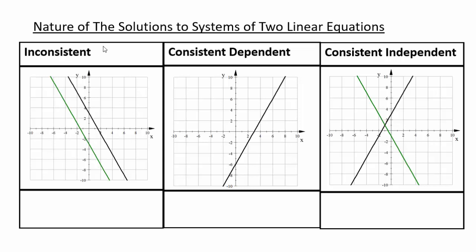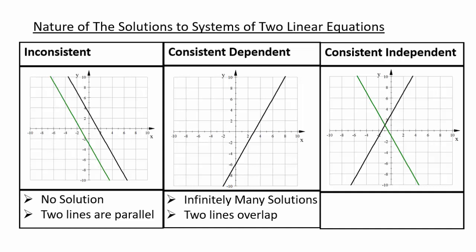When two lines are parallel, the system is called inconsistent. When the two lines overlap — parallel with the same y-intercept — the system is consistent dependent. When the two lines intersect at exactly one point, the system is consistent independent. So: inconsistent means no solutions (parallel lines); consistent dependent means infinitely many solutions (lines overlap); consistent independent means a unique solution at the point of intersection.